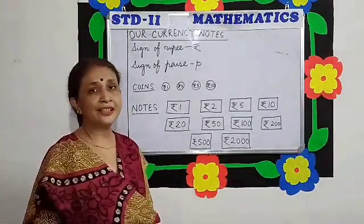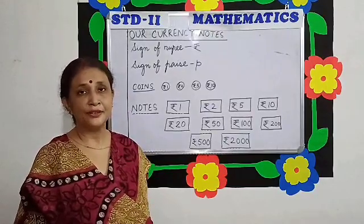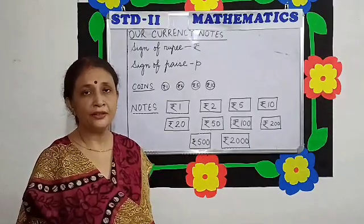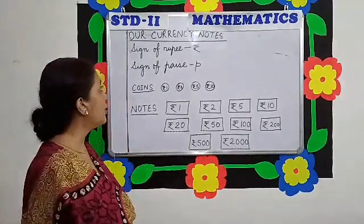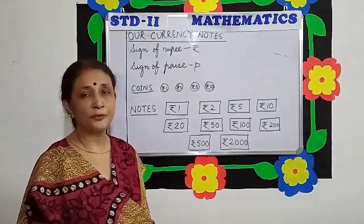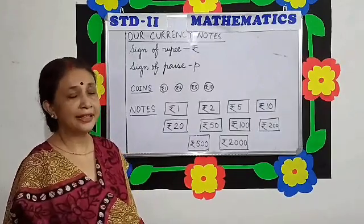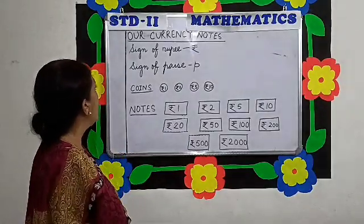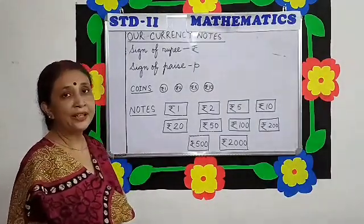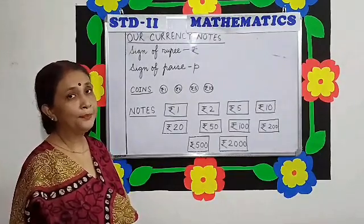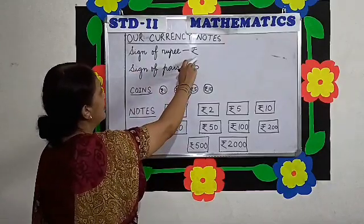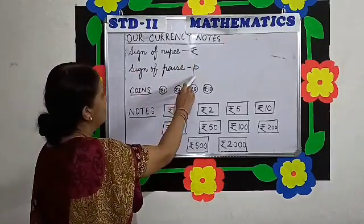What does this mean? This means money. We all need money. Whenever we go out for shopping, we all need money, because we pay the shopkeeper with money and the shopkeeper gives us things. Now, what is money? Money is called rupee in India — rupees and paise. The sign of rupee is this, and the sign of paise is P.